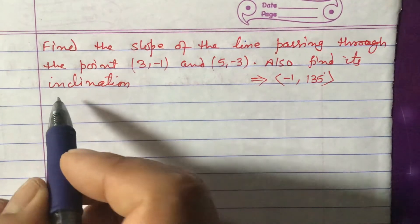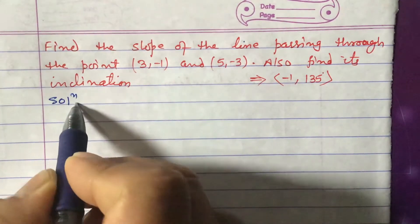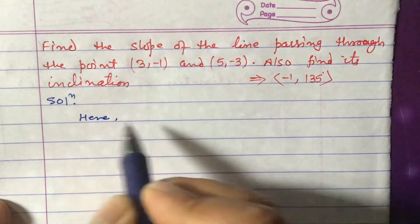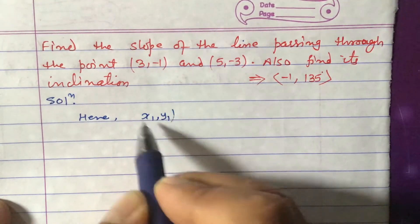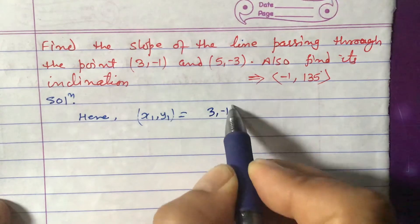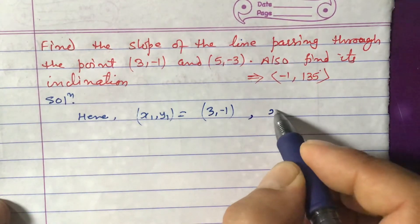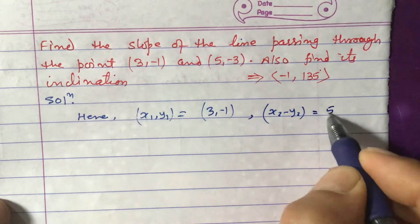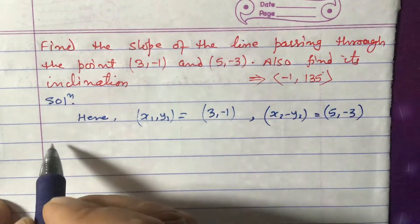Solution: here x1 comma y1 is equal to the first point (3, -1). Similarly, x2 comma y2 is equal to (5, -3).